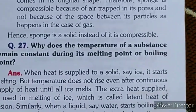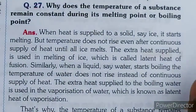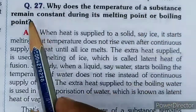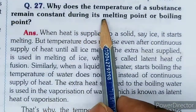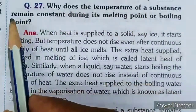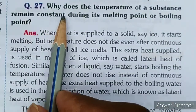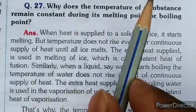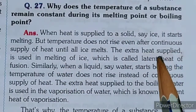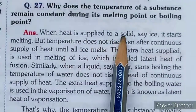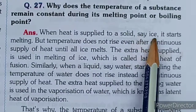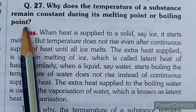Last question: Why does the temperature of a substance remain constant during its melting point or boiling point? The temperature remains constant - meaning it does not change - when a substance is melting or boiling. When heat is applied it starts melting, but temperature does not rise even after continuous heat supply. The extra heat supplied is used in the melting of ice.